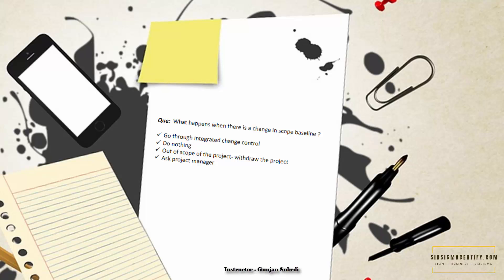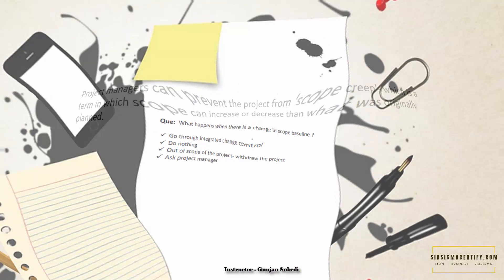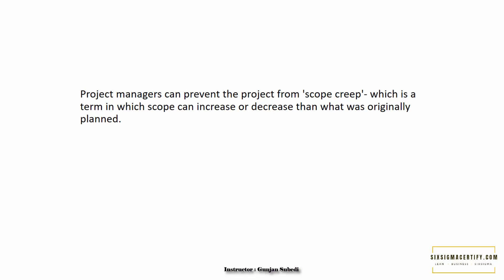The options are: we go through the integrated change control; we do nothing; this is out of the scope of the project so we withdraw the project; or we ask the project manager. Whenever there is a change in scope baseline, we have to go through the integrated change control process. So what is the importance of defining a scope or scope baseline?